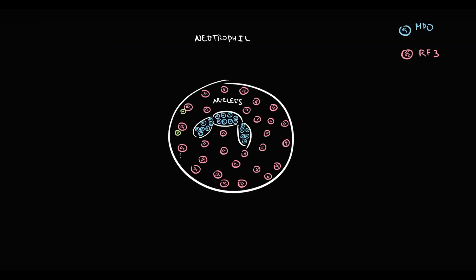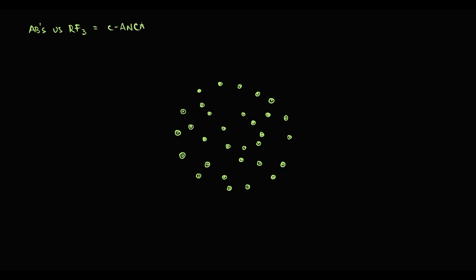If a patient has autoantibodies against PR3 enzyme, and this enzyme is located in the cytoplasm, these antibodies will be scattered throughout the cytoplasm. And this will form the so-called cytoplasmic pattern. Such antineutrophilic antibodies we call C-ANCA. And C-ANCA is a characteristic feature of Wegener's vasculitis.